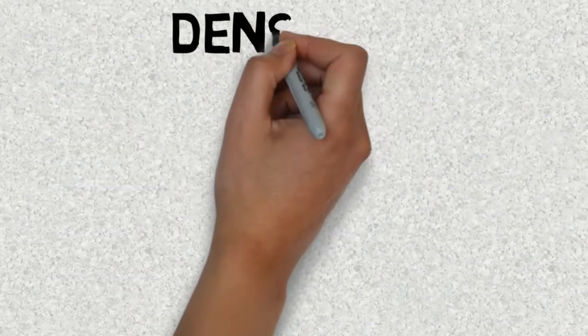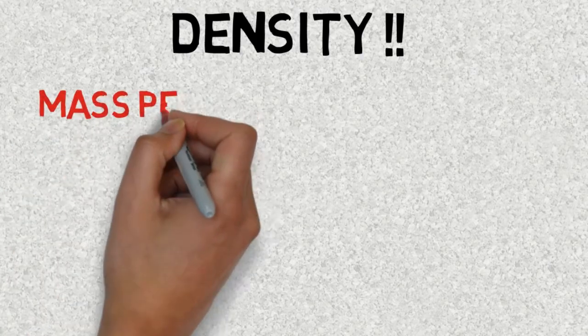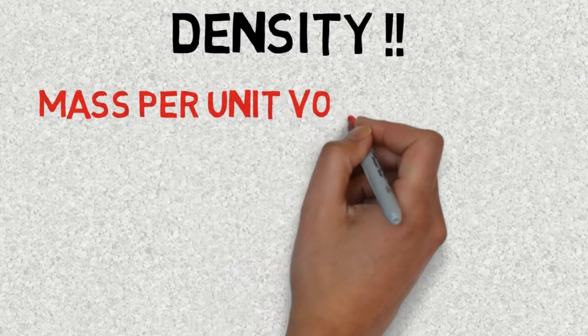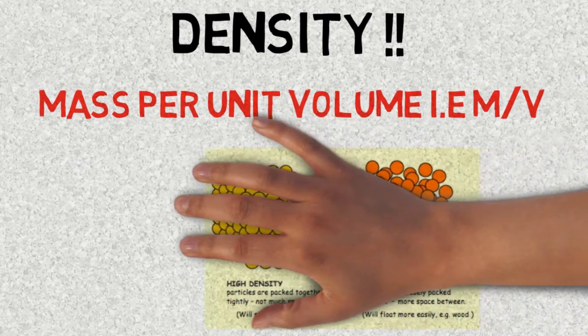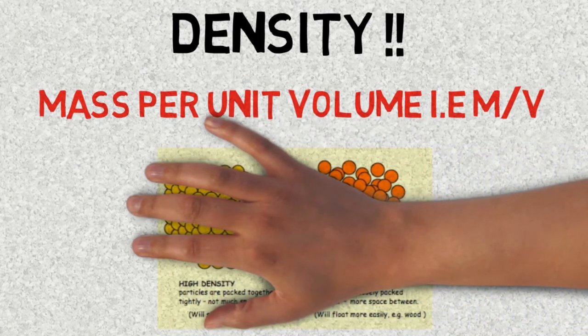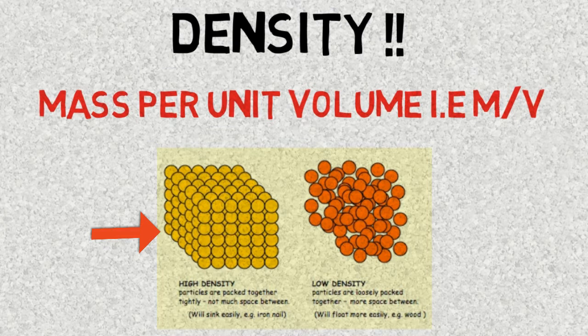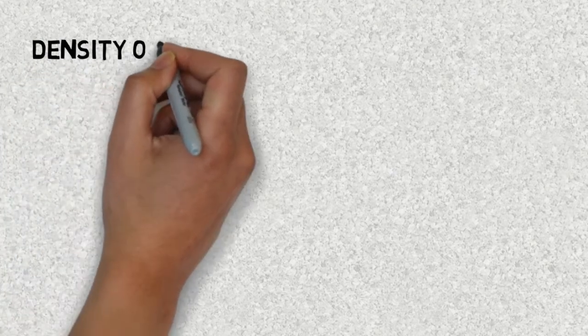To understand this, you need to understand the term called density. Density can be defined as mass per unit volume, that is m upon v. In this picture you can see that in the first one the particles are very closely packed and hence they have high density, and in the second one the particles are very loosely packed and the density is very less, making it less dense.